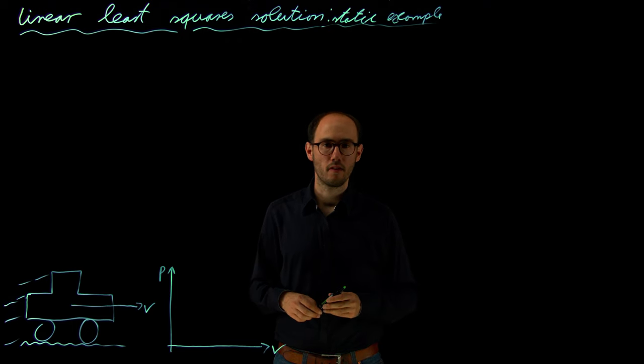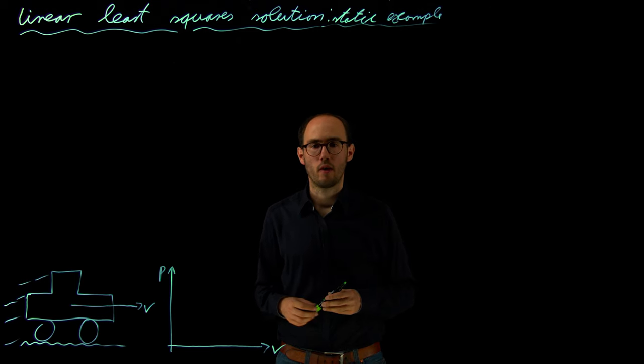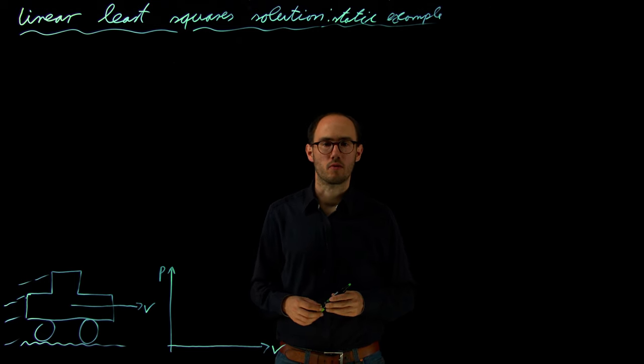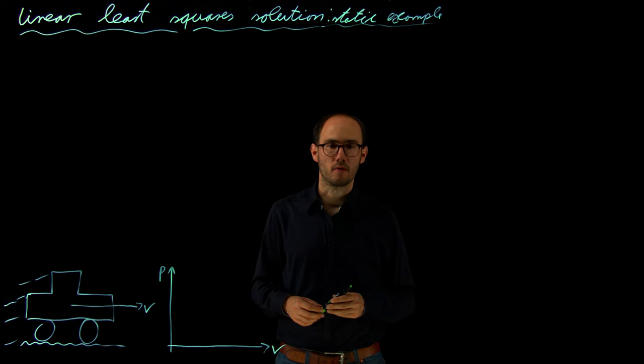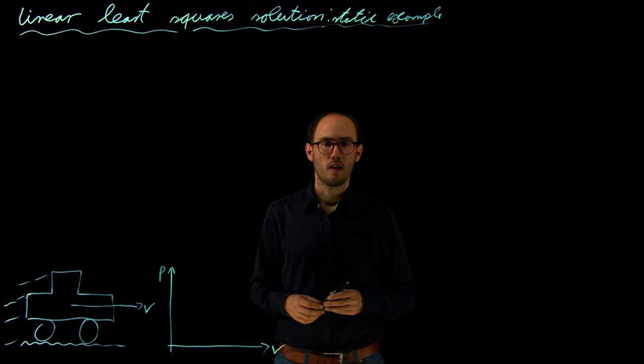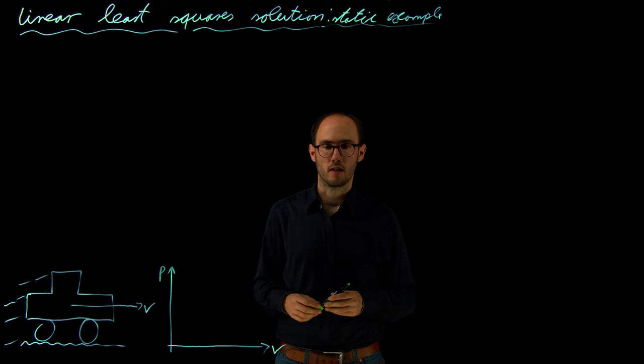Welcome. In the previous video we have seen how we can solve the ordinary least squares problem to find a parameter vector which describes the linear model in the best possible way in order to reduce the squared residuals between model and measurements. This I would like to apply to a simple example in this video.